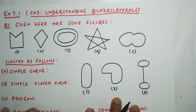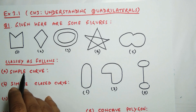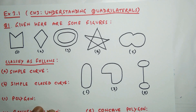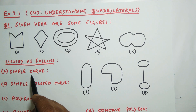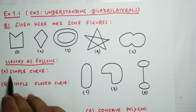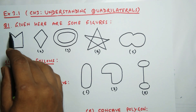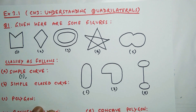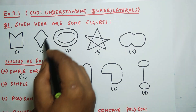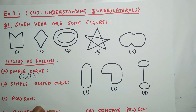First, I'll check which are simple curves. A simple curve means it should not intersect itself — it may be made of line segments or curved lines, it may be open or closed, but it should not intersect itself. Curve number one is a closed curve and nowhere has it intersected, so this is a simple curve. Number two also has no intersection, so two is also a simple curve.